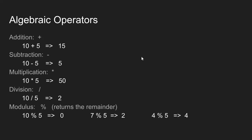Here are our five basic algebraic operators. The plus sign is the addition operator — it adds two values, so 10 plus 5 gives me 15. The minus operator subtracts values, so 10 minus 5 gives me 5. The multiplication operator is an asterisk, so 10 asterisk 5 stands for 10 times 5, giving us 50. And the division operator is a forward slash — 10 divided by 5 gives me 2.